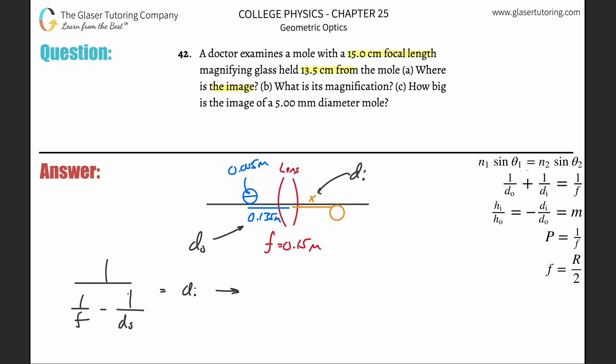When we do this, it's simply going to be one divided by one over the focal length of 0.15 minus one divided by the distance of the object 0.135. So do one divided by 0.15 minus one divided by 0.135, then do one divided by that value. So this is now negative, negative 1.35. What this basically means is that the actual image is negative 1.35 in terms of meters.